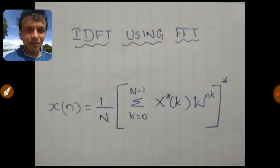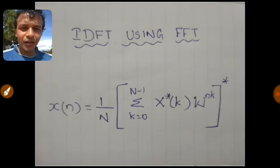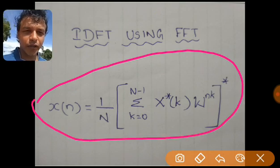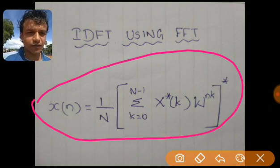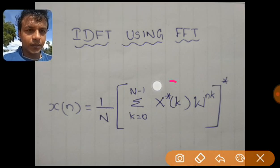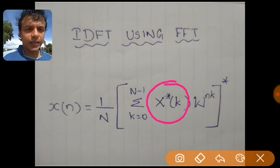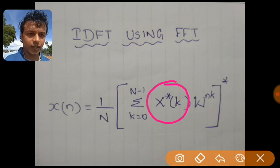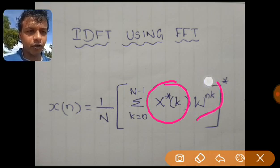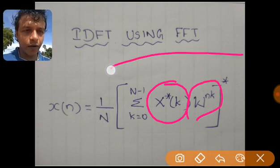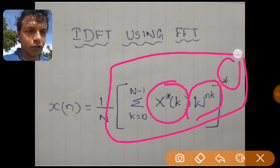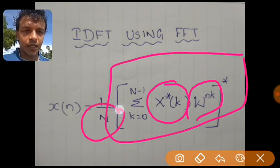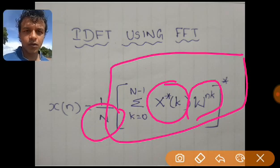This is the formula which is required to convert the discrete Fourier transform into inverse discrete Fourier transform. Here this is the DFT or FFT. We have to take the complex conjugate for that and we have to multiply it with the twiddle factor. Again, to the entire thing, we have to take the complex conjugate once again. Then we have to divide it by the total number of sample points.